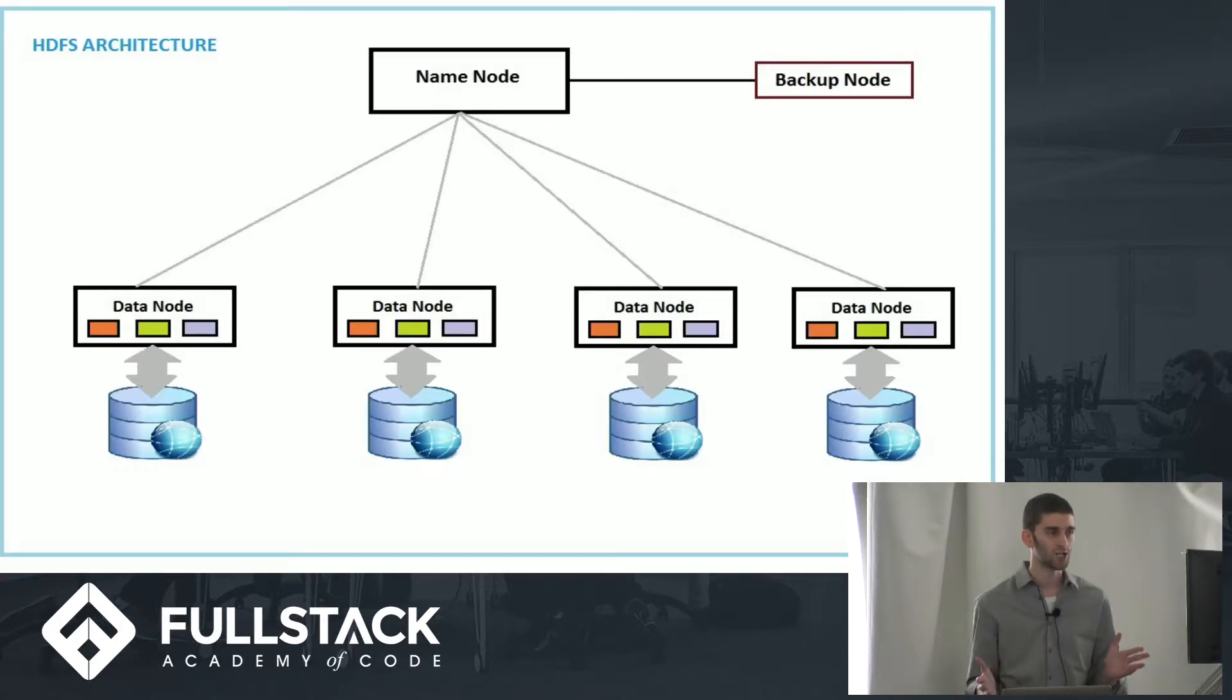And each cluster is going to have a name node that stores the locations of all the files among these thousands or hundreds or whatever number of servers. So, this is kind of what it looks like. You have a name node really at the top, and it distributes or holds the location on the data nodes of what each file is holding. And you can see the different colors in each data node represents the same file. So, the same file across different nodes. And the backup node is what happens if your name node breaks. You don't lose all the data. You still have another name node you can copy over if you ever need it.